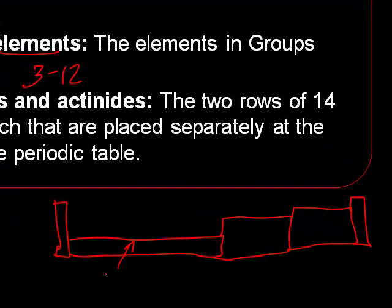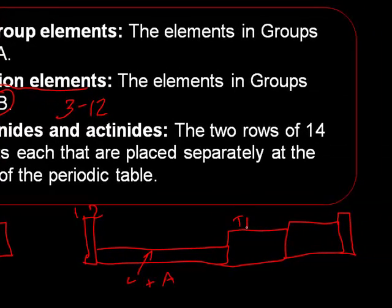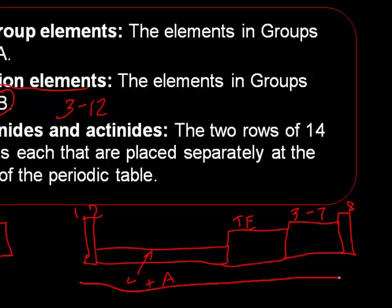So these are the lanthanides and actinides down here. This is the group 1 and group 2. These here are the transition elements. And then these are groups 3 through 7, and then the noble gases here. So the periodic table would just be a bit longer, and that's the reason why it's put on the bottom of the paper for the lanthanides and actinides.